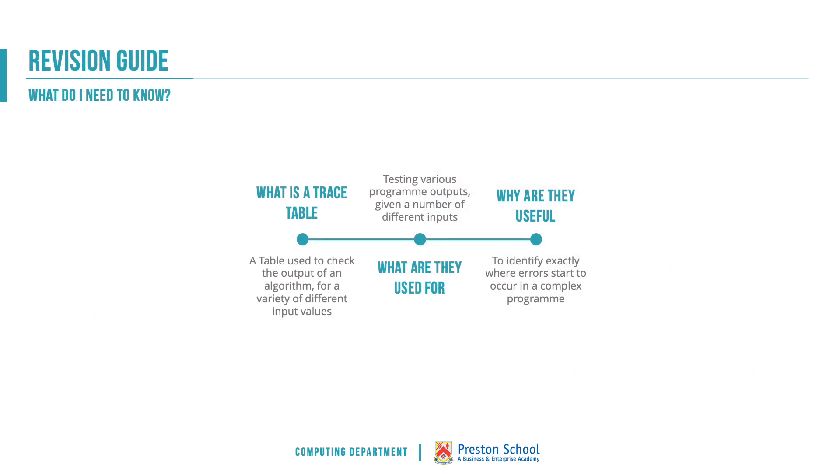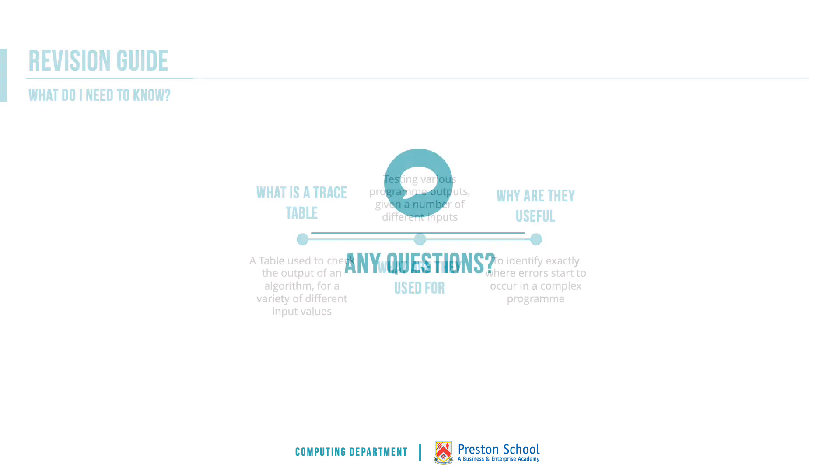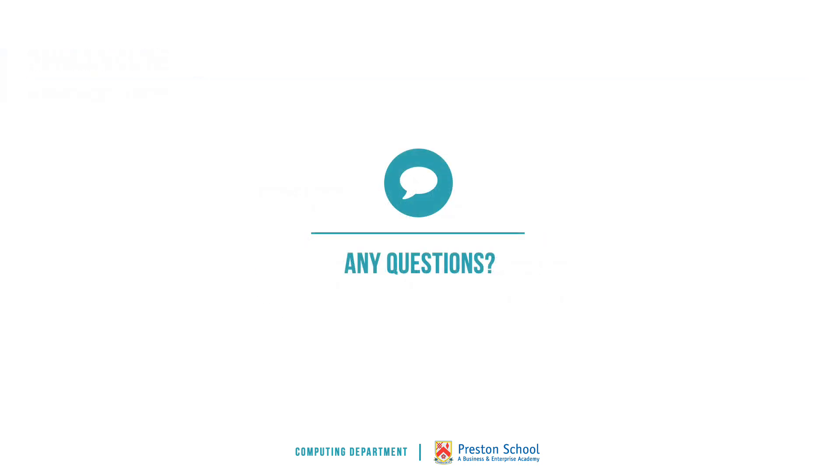As I said, a relatively short lesson today. A trace table is used to check the output of an algorithm at various points in time. You should be able to create one of those from some given pseudocode. Why are they useful? It allows us to spot errors in our code or outputs that aren't quite as we expected them to be. Hopefully you found that video lesson useful. If you have any questions, please post those either onto Google Classroom or into the comments section below. Thank you very much.